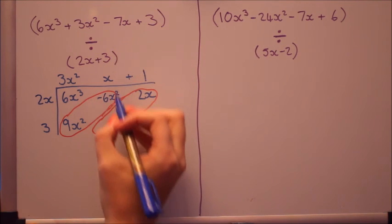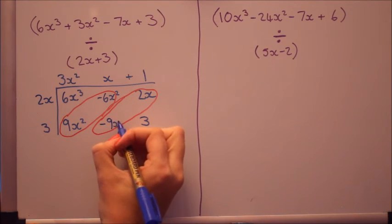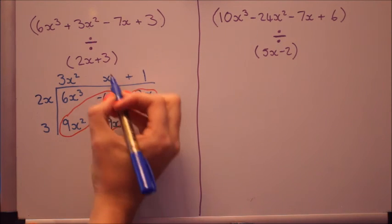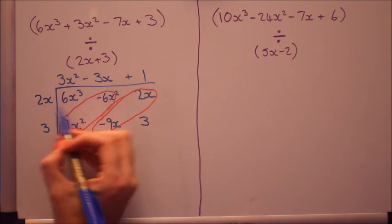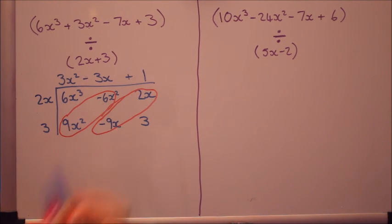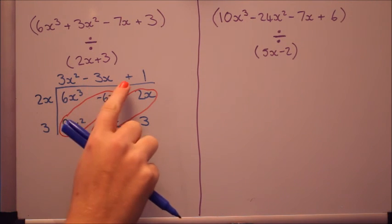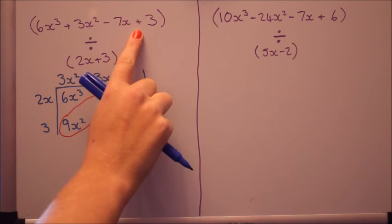Checking that we've got 3 times something is minus 9x. That's got to be minus 3x. Minus 3x times 2x is minus 6x squared. So that's brilliant. Again do check that works by multiplying this quadratic by the linear and checking that you get that polynomial there.